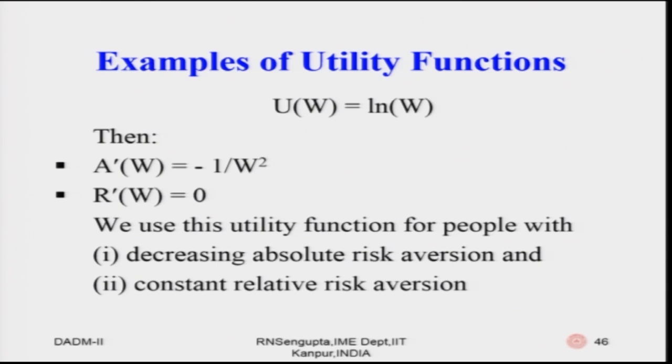So we can immediately comment: if we use this utility function, it has decreasing absolute risk aversion and constant relative risk aversion. This is the logarithmic utility function. Before drawing the graph, we put the values into the Excel sheet following the same procedure as for the quadratic utility function.